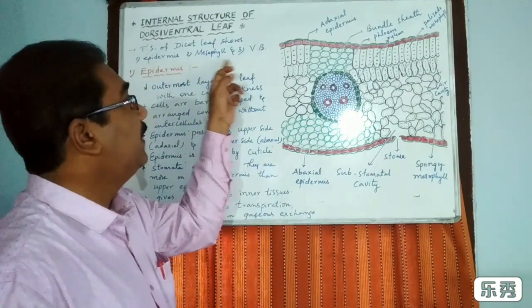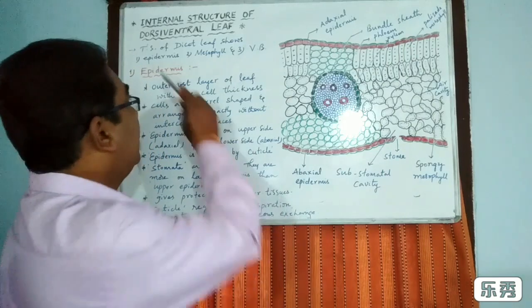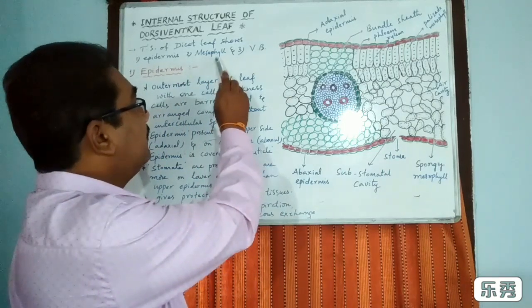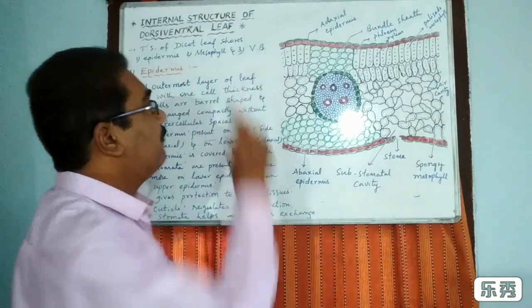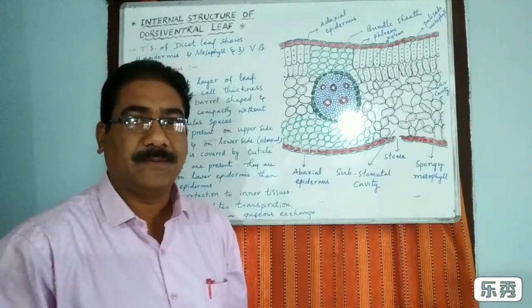The three main parts are: epidermis, mesophyll, and vascular bundles. These are the three types present in the dicot leaf.